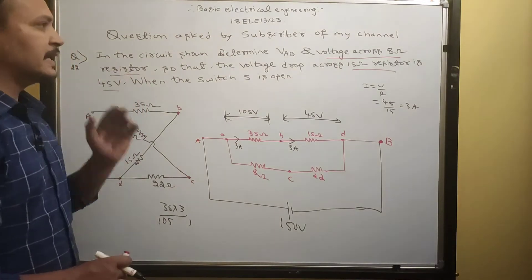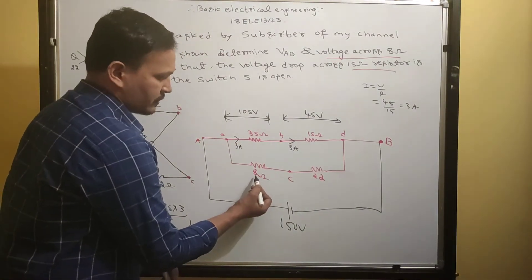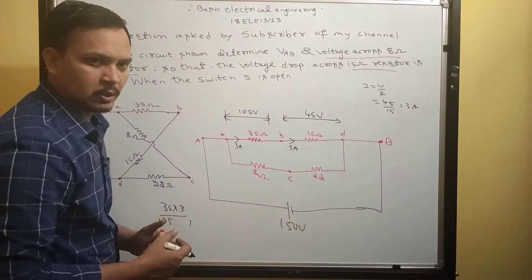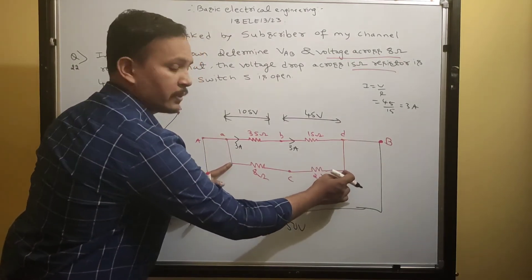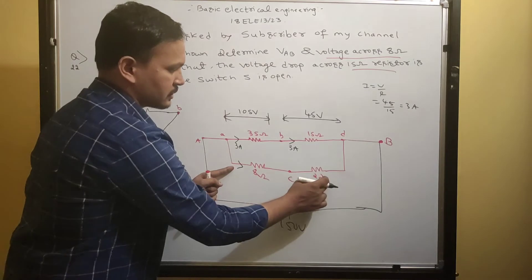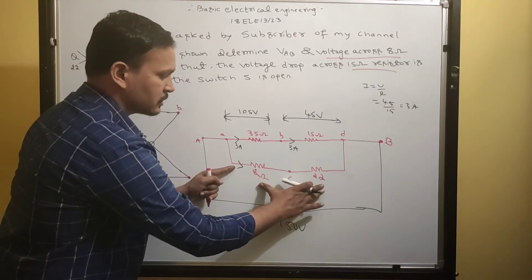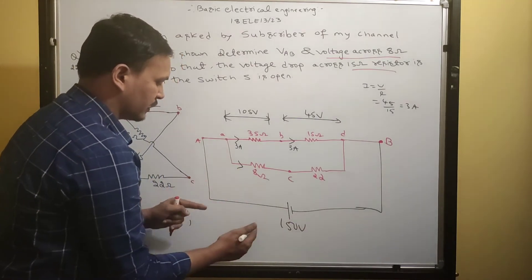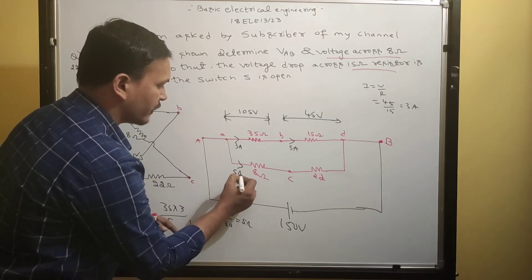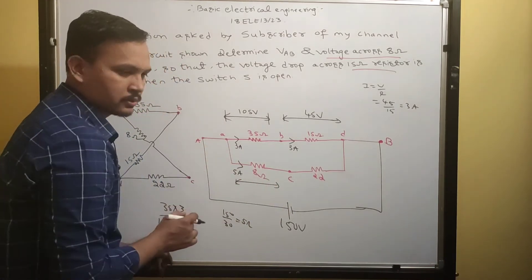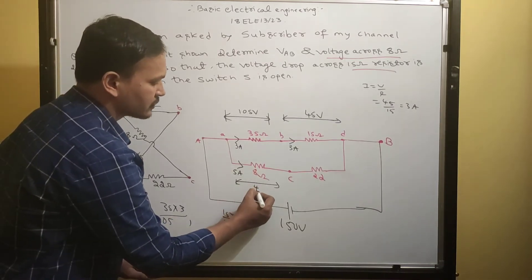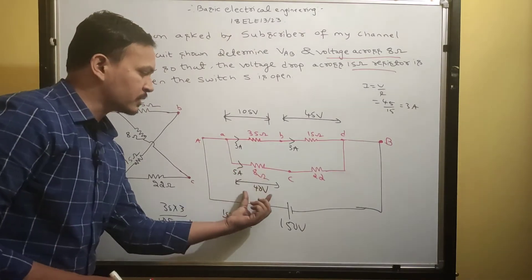For the second part — voltage across 8 ohm resistor — we see that 8 ohm and 22 ohm are connected in series: 22 + 8 = 30 ohms. The voltage across this series branch is 150 volts. Current = 150 / 30 = 5 amperes flowing through this branch. Voltage across 8 ohm resistance = 5 × 8 = 40 volts.